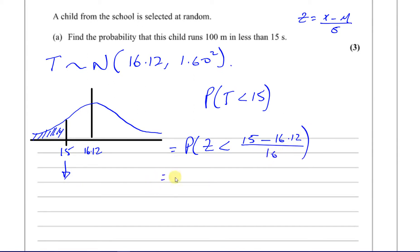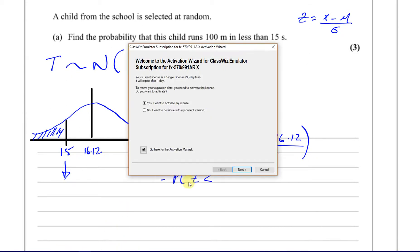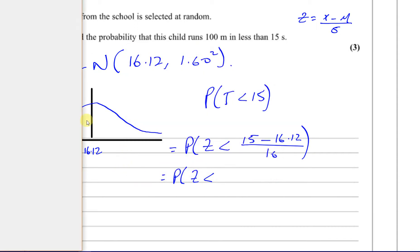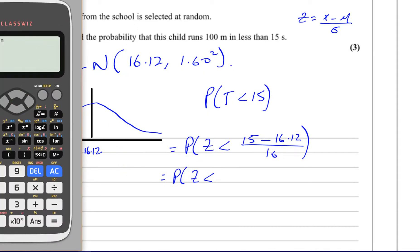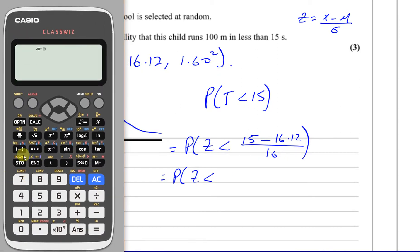So we've got to find the probability that z is less than 15 minus 16.12 divided by 1.6. Let's get the calculator here. So we're going to have 15 minus 16.12 over 1.6. That gives us minus 0.7.